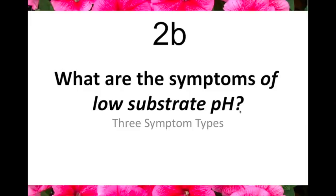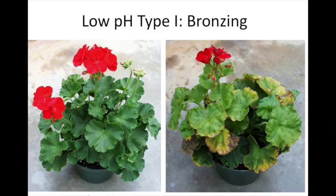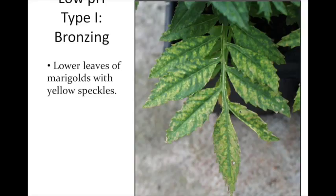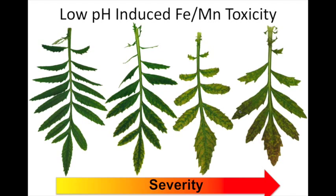On the opposite end of the spectrum, what do symptoms look like if the pH is too low? There are three main symptoms. The classical bronzing — the good plant on the left, the yellowing and bronzing occurring on the plant on the right — the pH is too low. You're starting to look at a pH value below 5.5 or 5.2 when you really start seeing problems. On a marigold, this almost looks like magnesium deficiency because it's lower foliage — a quick substrate test will tell you the pH is very low, around 5.4 or 5.2. You'll see progression from not very severely affected on the left to necrosis occurring on the right, showing the severity of iron manganese toxicity on marigolds.